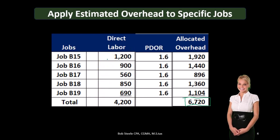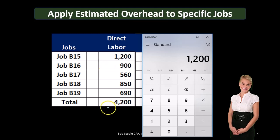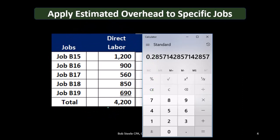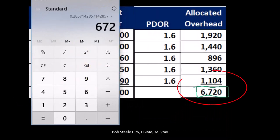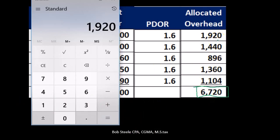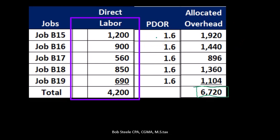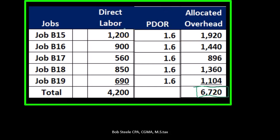Essentially, we're doing ratio analysis. For example, one particular job has 1,200 of the total 4,200 in direct labor. We take that percentage times the total overhead of 6,720, and that gives us 1,920 for that job. That's what the predetermined overhead rate is based on — allocating the proper amounts to jobs based on their relative size, with relative size determined by the direct labor applied to each one.